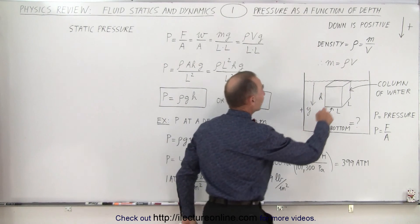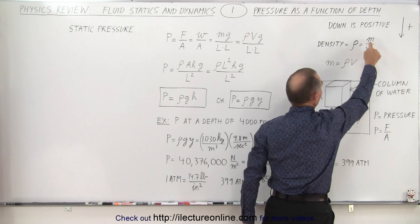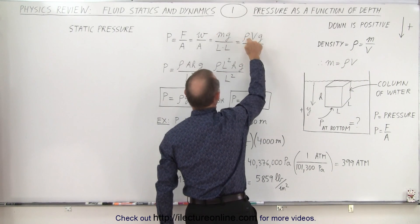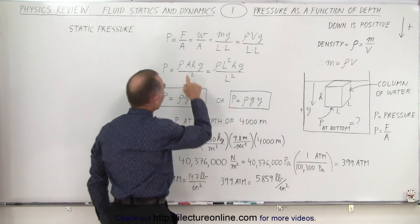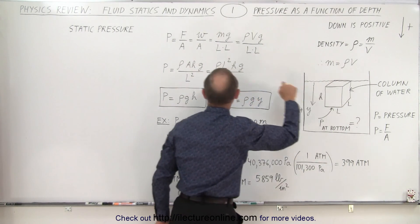Density equals mass divided by volume. Solving for mass gives us density times volume, so we replace m with ρV. The volume of the column equals the cross-sectional area L² times the height h.